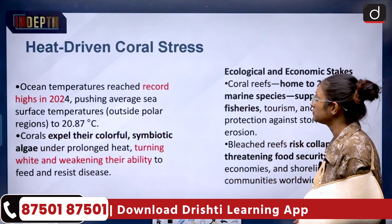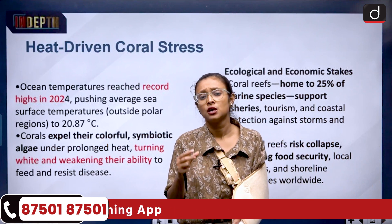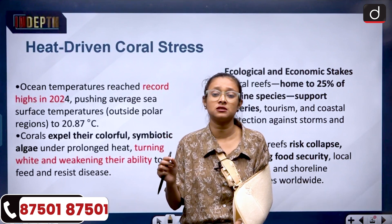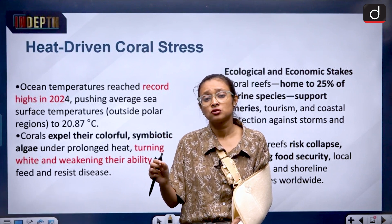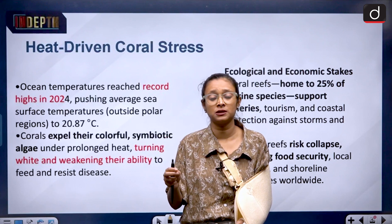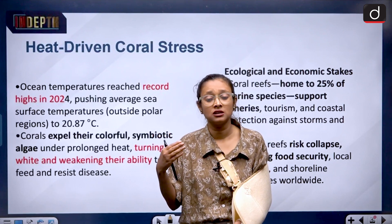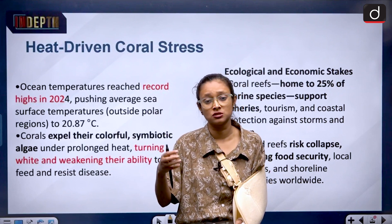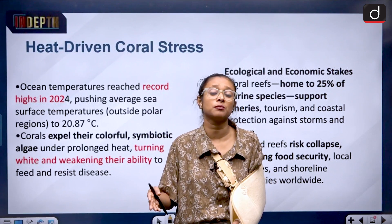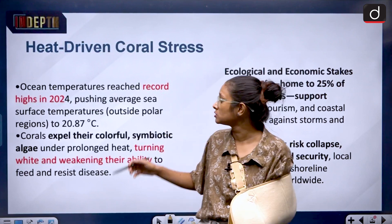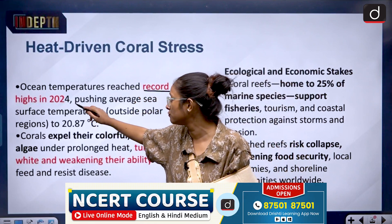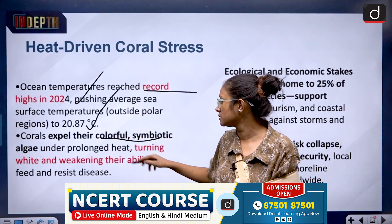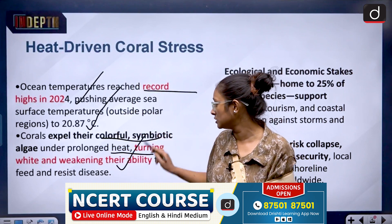Coming to the discussion part on heat-driven coral stress. First of all, what are coral reefs? Coral reefs are small animals — in short we call them polyps — and they have algae on them, also called zooxanthellae. They acquire food from the zooxanthellae, but due to global warming the algae started disrupting and as a result coral reefs could not get their food, causing massive coral bleaching. Ocean temperature reached record highs in 2024, pushing average sea surface temperature outside polar regions to 20.87 degrees Celsius. Corals expel their colourful symbiotic algae under prolonged heat, turning white and weakening their ability to feed and resist diseases.